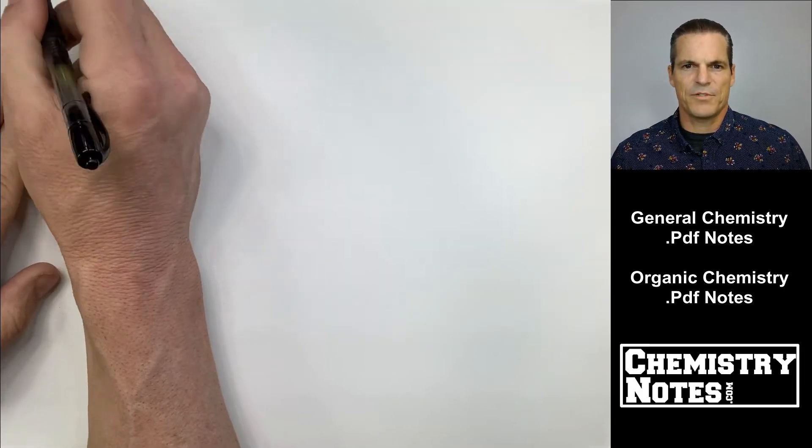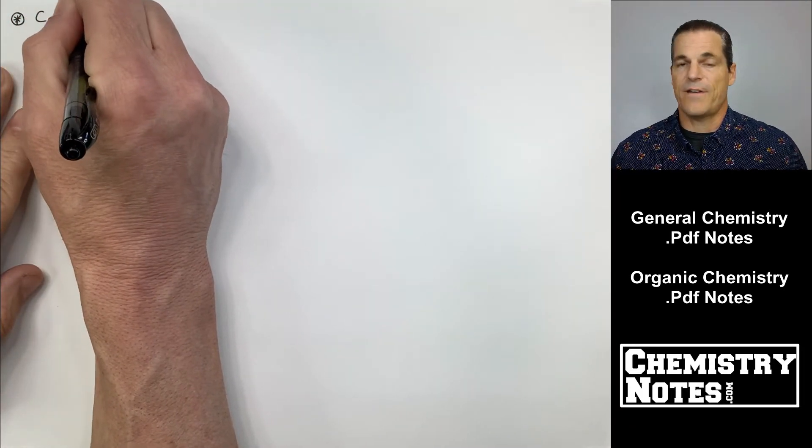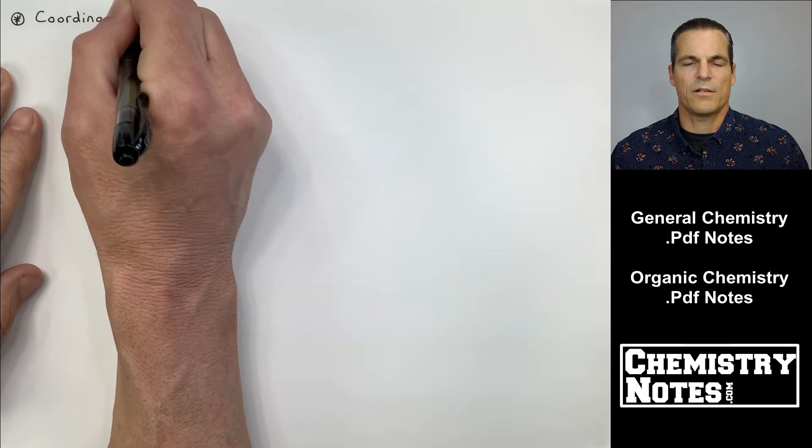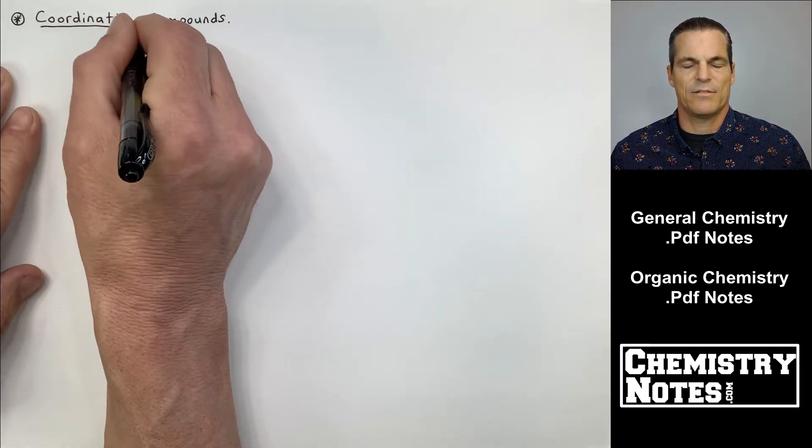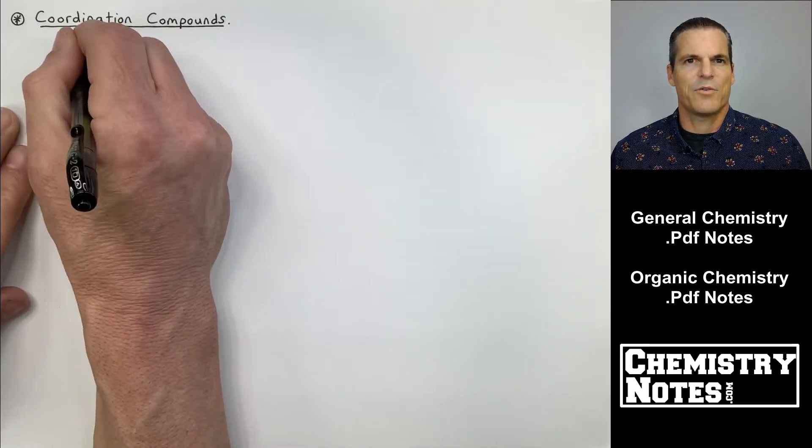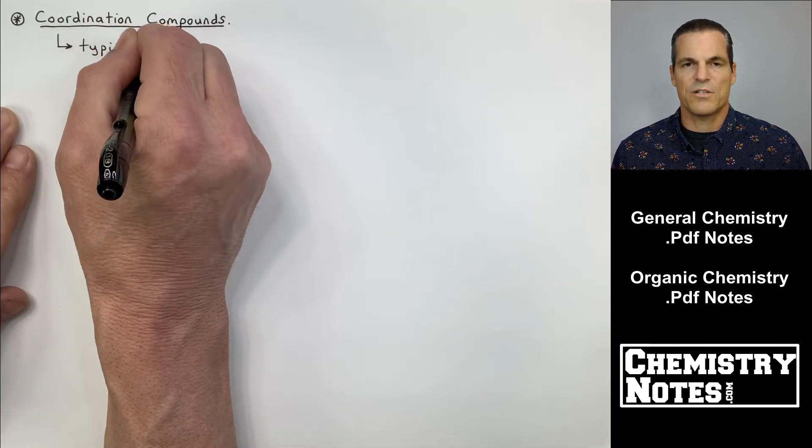Hi everybody, Justin here from chemistrynotes.com and finally we are going to start to cover the meat of section 18. Section 18, it's kind of like chapter 18, it's transition metals and coordination compounds.